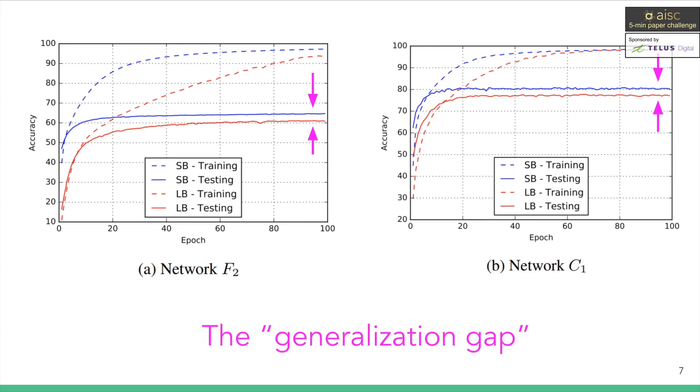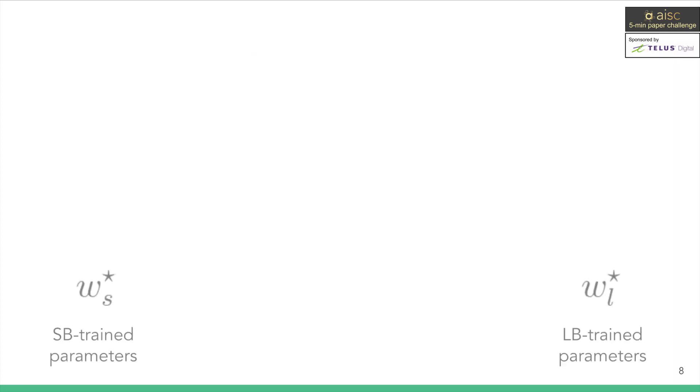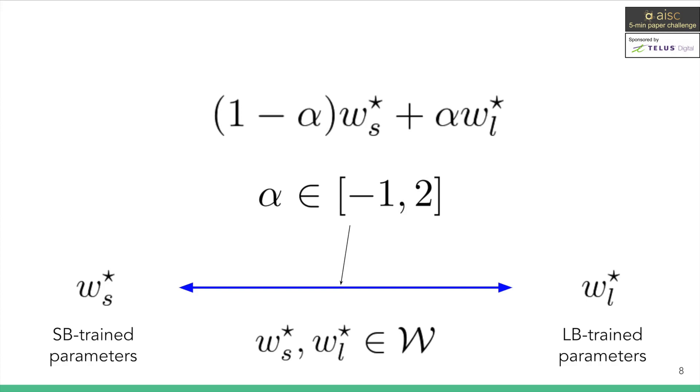But why is that the case? To find the answer, let's run more analysis. We obtain sets of parameters we train from both SB and LB. Let's make a new hybrid parameter set by mixing parameters from both regimes via a linear combination, controlled by a value alpha. We then apply an objective function, for example our loss function, to our hybrid parameter set.